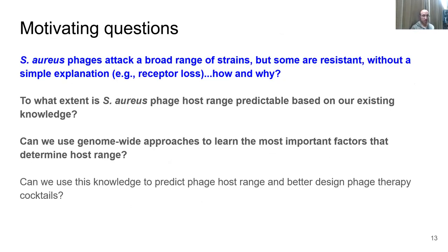The motivating question was a fundamental paradox about S. aureus phage host range: S. aureus phages have broad host ranges, but there are still some resistant strains, and there doesn't seem to be a simple explanation, like loss of the wall teichoic acid receptor. I'm answering this in two ways. The retrospective method determines to what extent phage host range is predictable based on existing knowledge. The prospective method uses a naive hypothesis-free genome-wide approach to learn the most important factors determining host range — ultimately to better predict host range and design effective phage therapy cocktails.